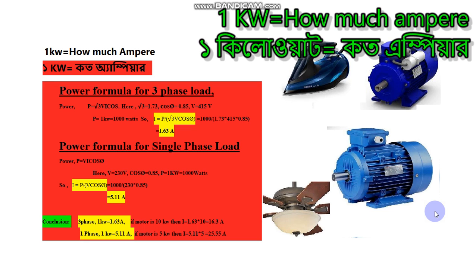Rearranging for current: I = P ÷ (√3 × V × cosθ). Substituting values: I = 1000 ÷ (1.73 × 415 × 0.85). Solving this equation, we get 1.63 amperes as the ampere rating of a 1-kilowatt three-phase load.